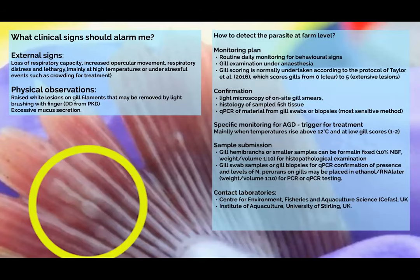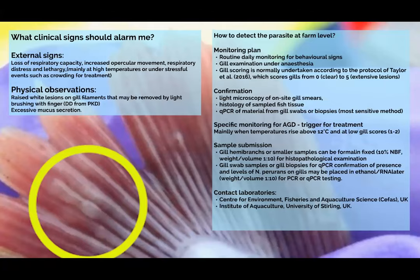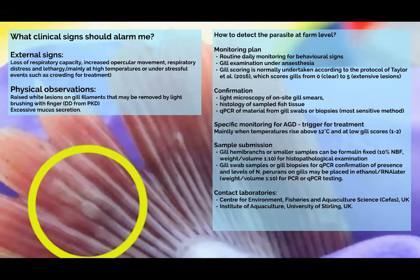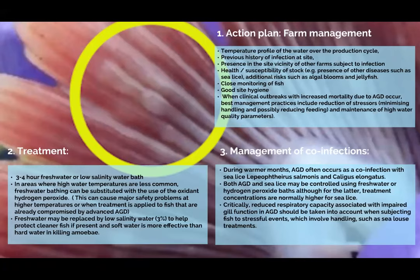The monitoring plan recommends taking gill samples and scoring them according to the protocol developed by Taylor, on a scale of 0 to 5, following integrated pest management practices for AGD. Samples should always be sent for confirmation using histopathology or qPCR. The usual reference laboratories are CIFAS and the University of Stirling. Actions are described in terms of farm management, treatment, and management of co-infections.